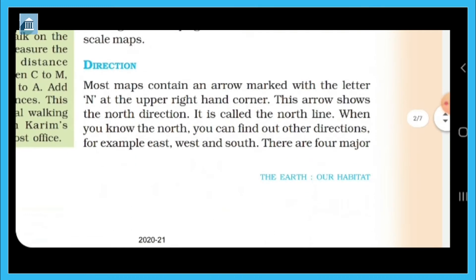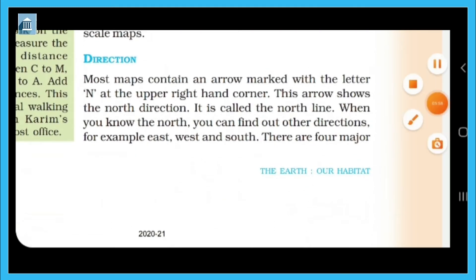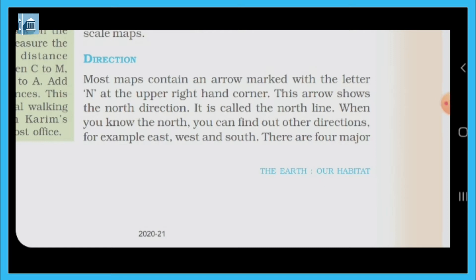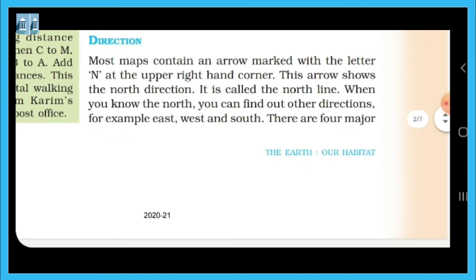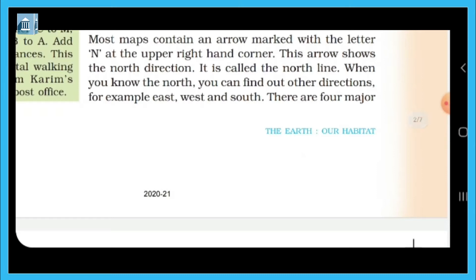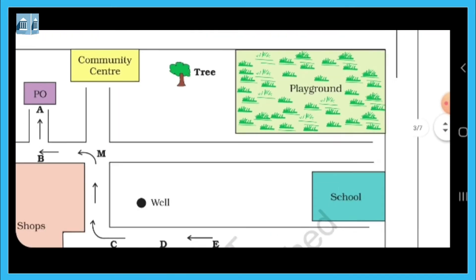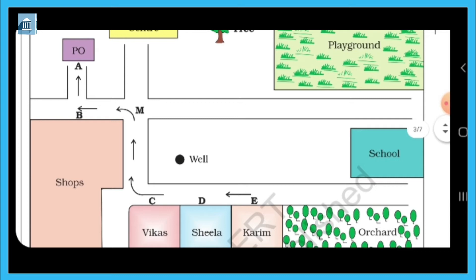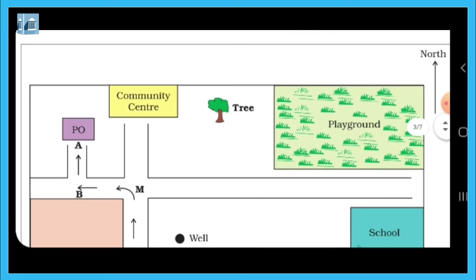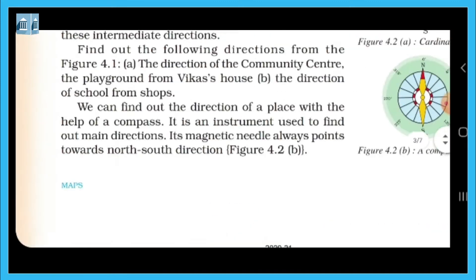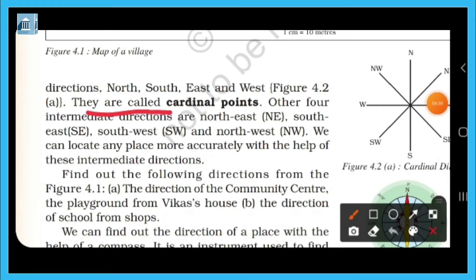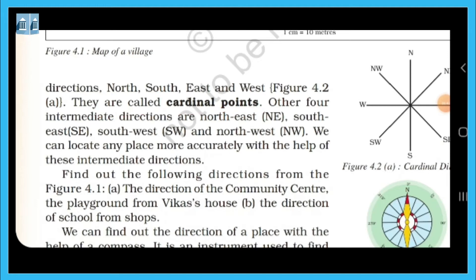Now, direction. Most maps contain an arrow marked with a letter in the upper right-hand corner. This arrow indicates the north direction and is called the north line. If you know the north direction, you can find all other directions. These are called the cardinal points, as well as the intermediate directions.